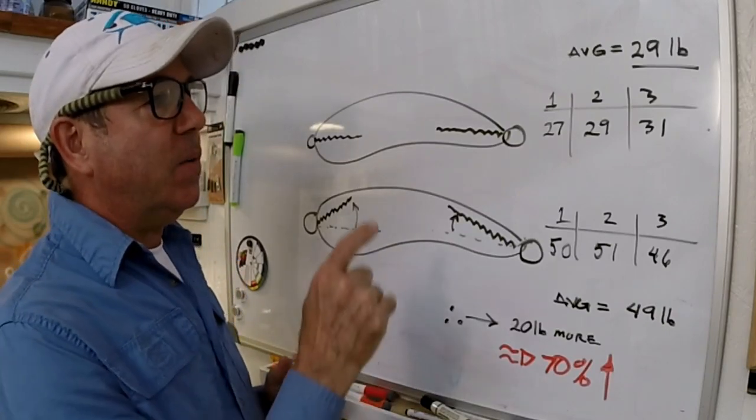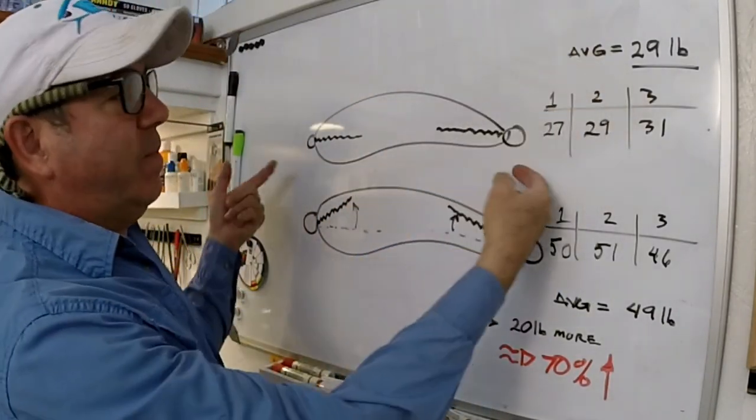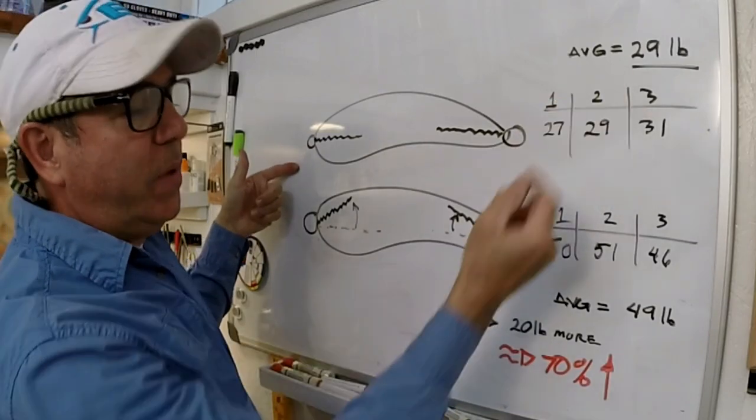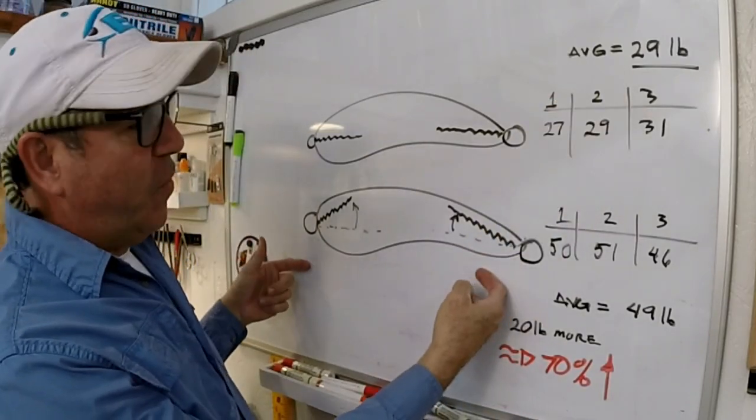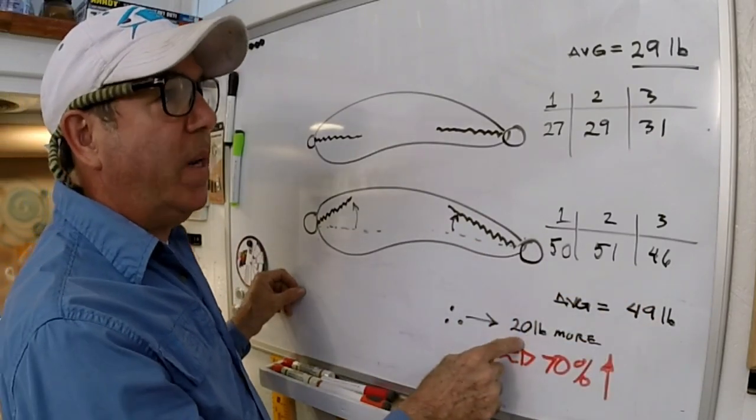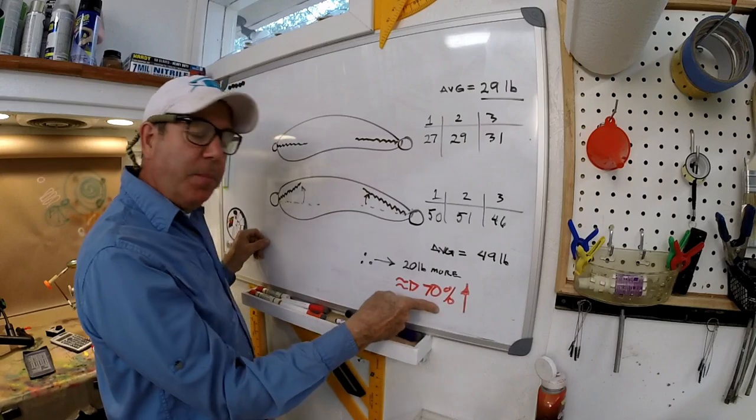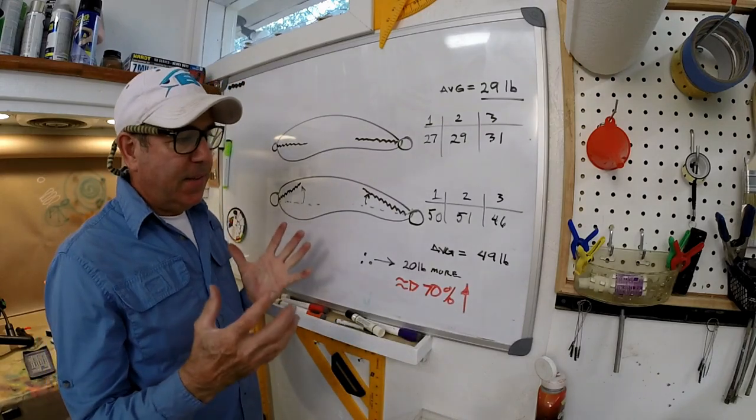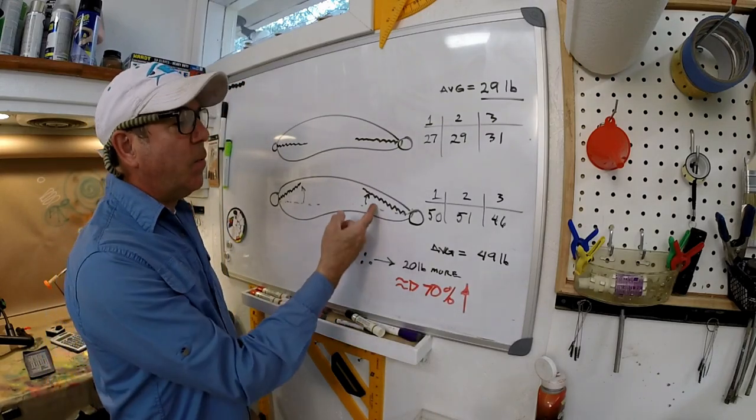So the average for the inline parallel was 29 pounds. The average for the off-angled one was 49 pounds. That's 20 pounds difference. That's a 70% increase in strength. So I think it's worth it. That's the way I do mine.